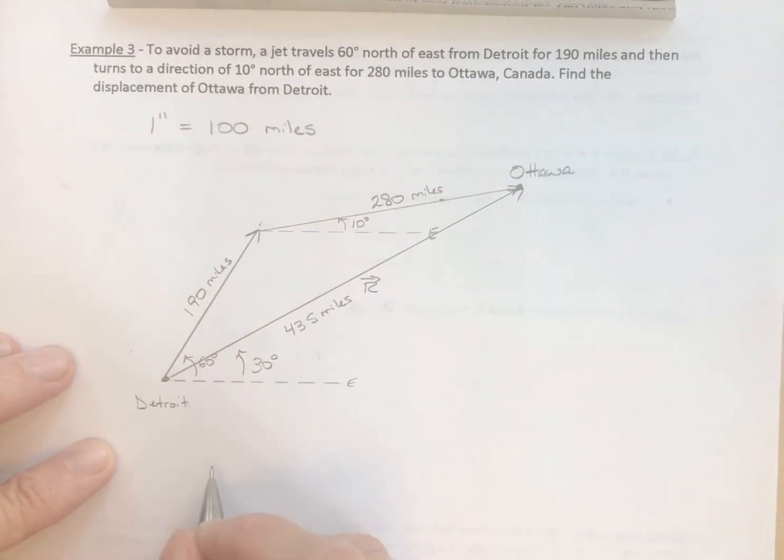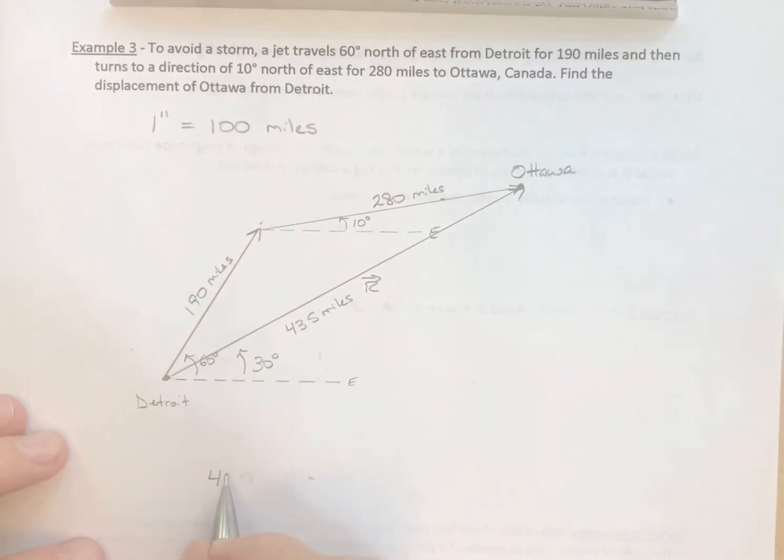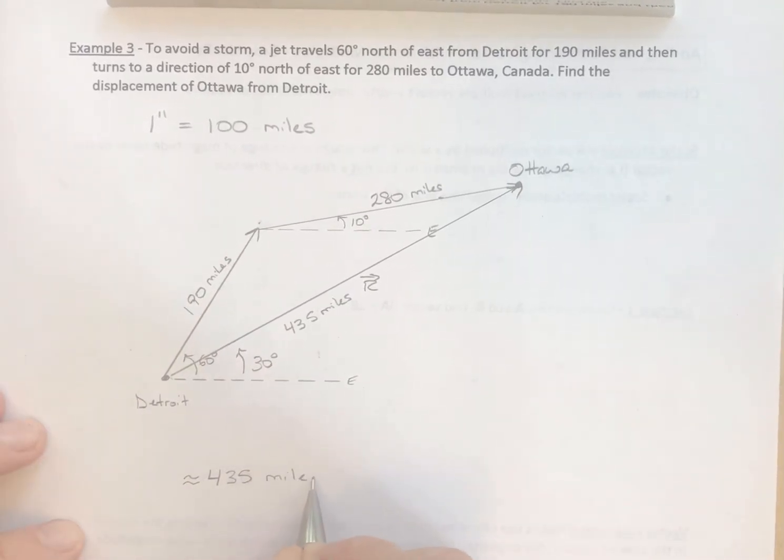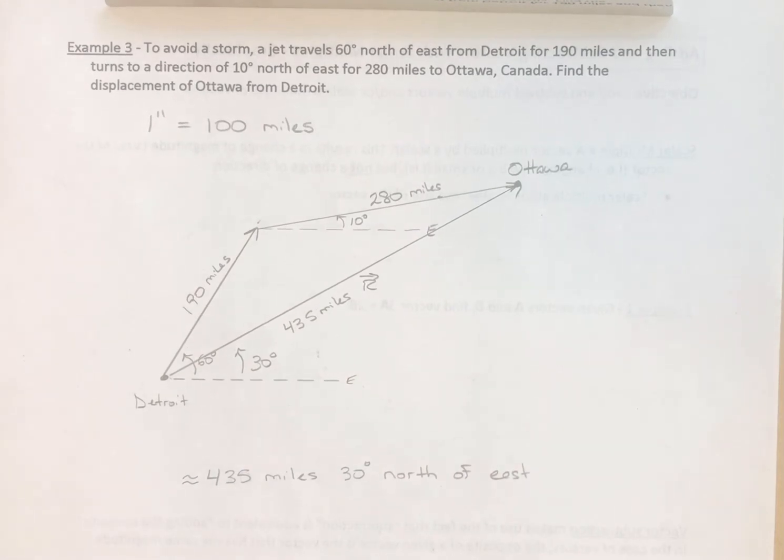The displacement of Ottawa from Detroit is approximately 435 miles, 30 degrees north of east. So there's how you do it. You can solve more of a real-life problem graphically. We're going to find out very shortly in the next set of video lectures how we can do that much more precisely using vector components. But there's how you can do it graphically, pencil, paper, ruler, and a compass.